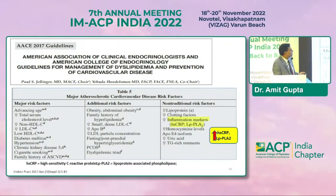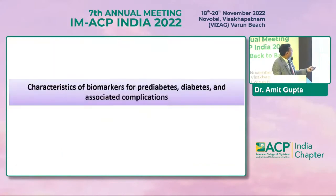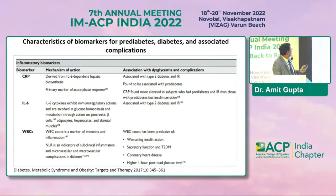The ACE 2017 guidelines mention inflammatory markers like CRP, lipoprotein-associated phospholipase A2, and PLA2 as non-traditional risk factors for type 2 diabetes. CRP, derived from IL-6-dependent hepatic biosynthesis, is the primary marker of the acute phase response and is associated with type 2 diabetes and insulin resistance. IL-6 exhibits immunoregulatory actions and is involved in glucose homeostasis and metabolism through action on pancreatic beta cells, adipocytes, hepatocytes, and skeletal muscles.